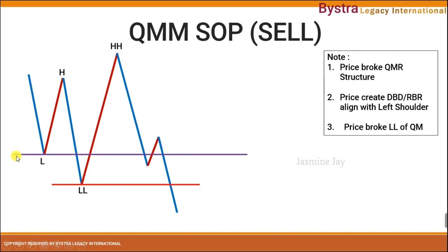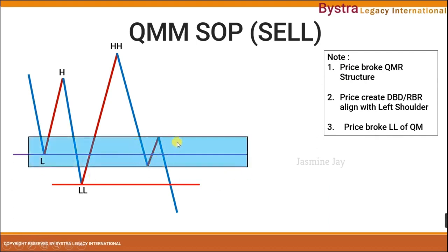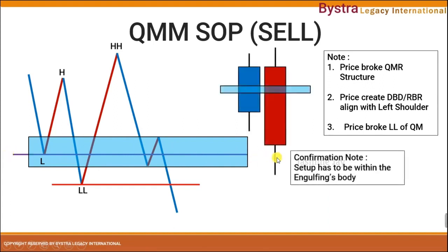First, we draw a horizontal line aligned with the left shoulder, which is the low, and mark the zone of the drop base drop. Make sure that the zone of the drop base drop — which is the candlestick body — is aligned with the entry point, which is this horizontal line. This is where we will set our pending order. And importantly, on the higher time frame we must always have an engulfing candle. Make sure the setup is within the engulfing candle's body, not on top of the wick. At the bottom of this area is fine, but not on top of the wick. Price will then react to this area and continue downward.